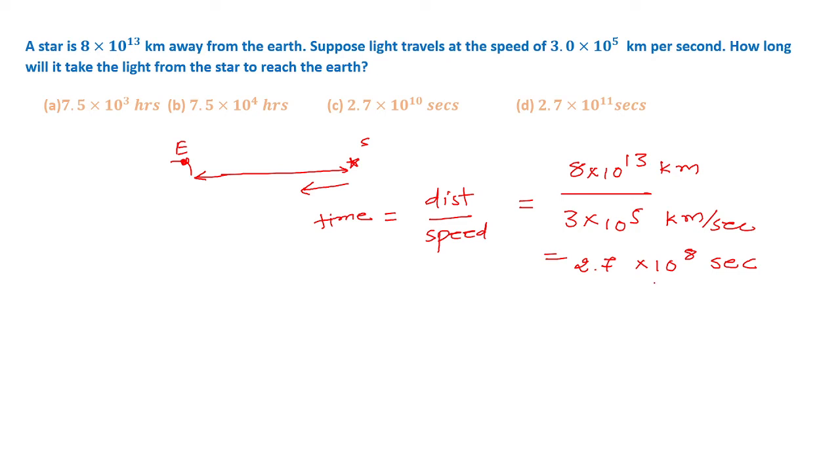But as this answer is not available in any of the options, we need to convert these seconds into hours. So this would be 2.7 × 10^8 divided by 60 × 60 hours. If we simplify this equation, then this would be 7.5 × 10^4 hours.